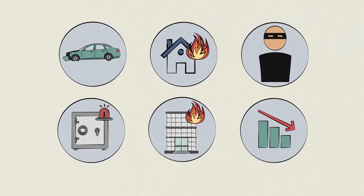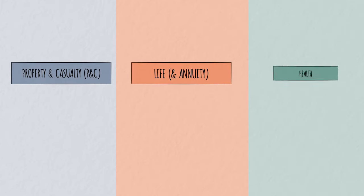There are hundreds of risks which individuals and businesses face which they may want insurance to protect them from. The insurance industry groups these into three main categories: property and casualty or P&C, life, and health.